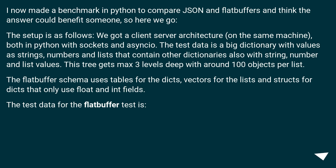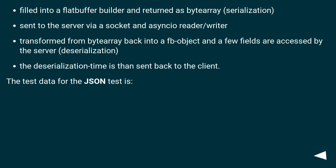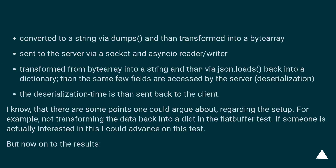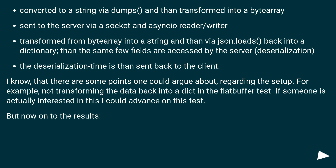The test data for the flatbuffer test is filled into a flatbuffer builder and returned as a byte array (serialization), sent to the server via a socket and asyncio reader/writer, then transformed from byte array back into a FB object and a few fields are accessed by the server (deserialization). The test data for the JSON test is converted to a string via dumps and then transformed into a byte array, sent to the server via a socket and asyncio reader/writer, transformed from byte array into a string and then via json.loads back into a dictionary, then the same few fields are accessed by the server (deserialization). The deserialization time is then sent back to the client.